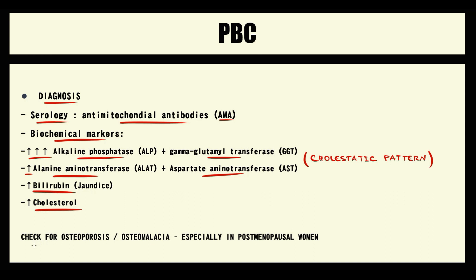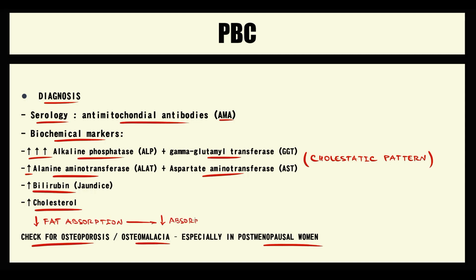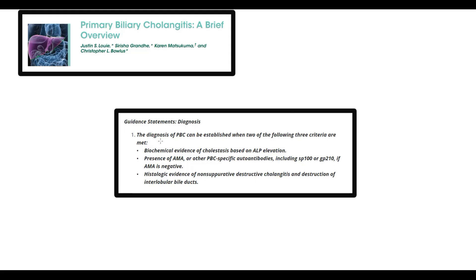In patients with primary biliary cholangitis, we must check for osteoporosis or osteomalacia, especially in postmenopausal women. With decreasing bile acids entering the duodenum, absorption of lipids decreases, including fat-soluble vitamins such as vitamin D. This causes decreased vitamin D levels, which in turn causes decreased calcium absorption. With decreasing calcium levels, osteoporosis develops. According to current guidelines, to make a diagnosis of primary biliary cholangitis, we need to determine changes in biochemical analysis, primarily elevation of alkaline phosphatase.